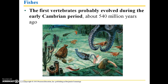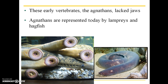Fishes were the first vertebrates that evolved during the early Cambrian period about 540 million years ago. The very first vertebrates were known as the agnathans and they did not have jaws. Today this group is represented by lampreys and hagfish — here are pictures of lampreys and a hagfish.